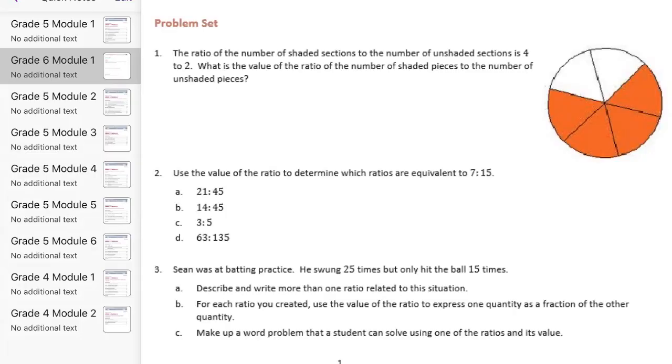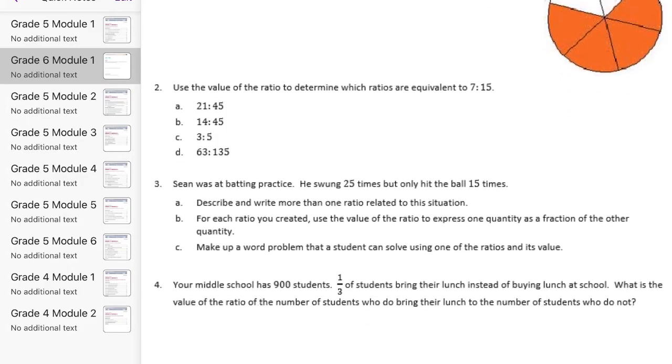The ratio of the number of shaded sections to the number of unshaded sections is 4 to 2. What is the value of the ratio of the number of shaded pieces to the number of unshaded pieces? Now we're finding the value. We can see from the picture that they told us the ratio is 4 to 2.